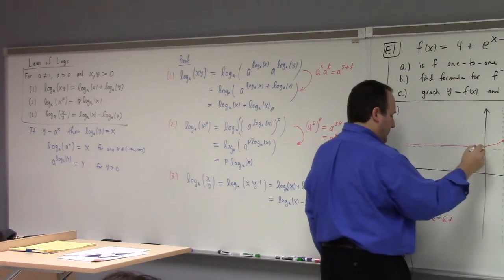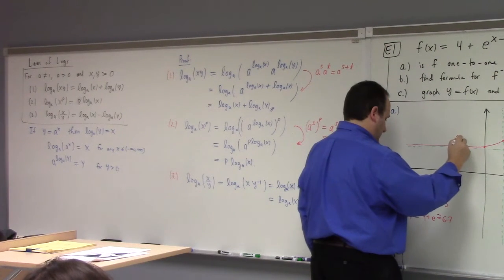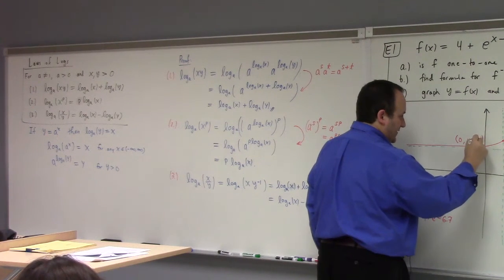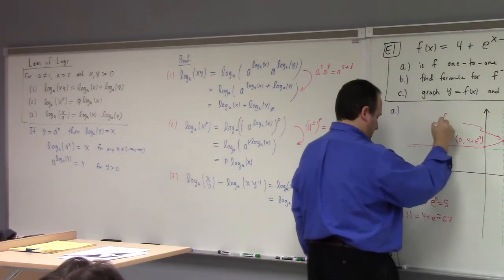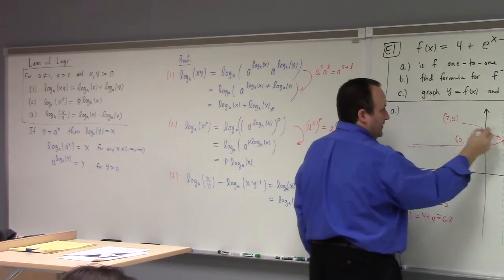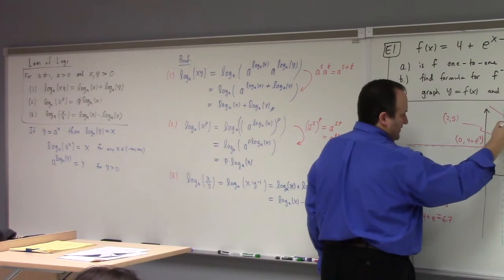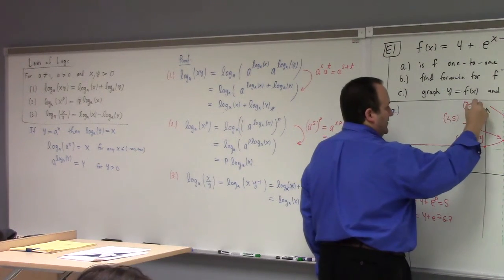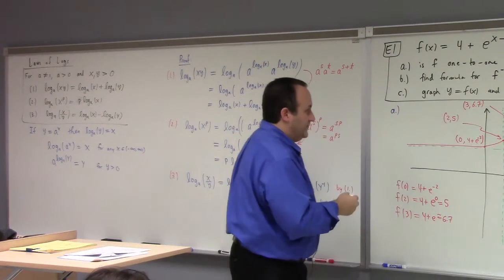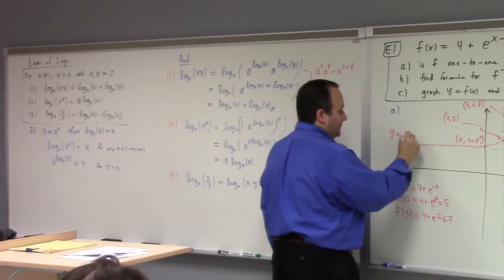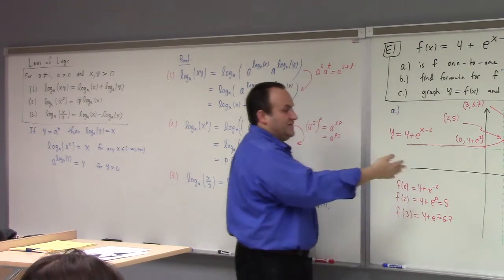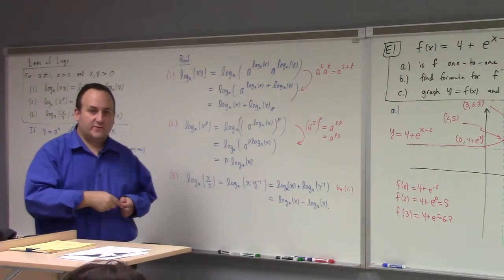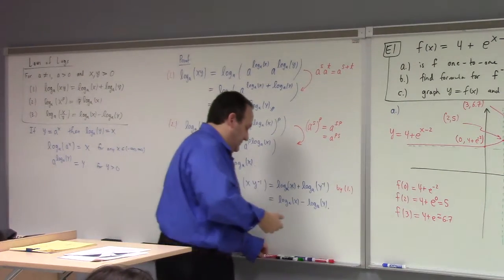I'm going to keep these three points for later. The three points we just found were: (0, 4 + e^(−2)), that's the y-intercept; (2, 5); and (3, 6.7). Those are three points on the graph y equals f of x. Now that we've done all this, is this function one-to-one? Yes — it passes the horizontal line test. So yes, the function is one-to-one.